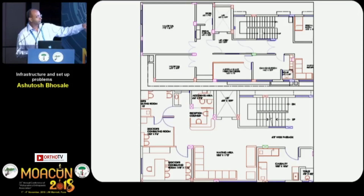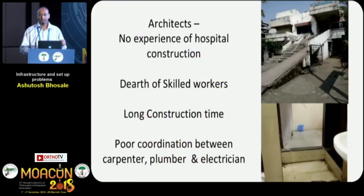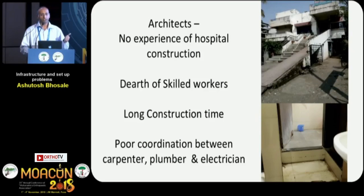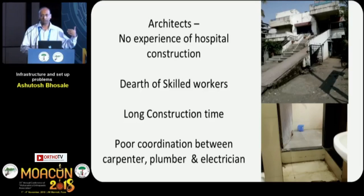If you look at the consulting room and the casualty, there's a waiting area in between, or even a lift turning radius that hasn't been thought through. This happens because architects have no experience with hospital construction in rural areas. There is a lack of skilled workers, long construction times, and poor coordination among carpenters, plumbers, and electricians. You end up with big ramps or big steps in orthopedic hospitals and have to cope with that.